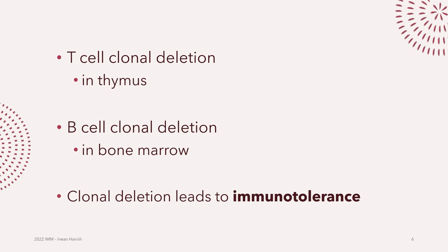This process of clonal deletion is part of the early maturation of lymphocytes in the primary lymphoid organs — the thymus for T cells and bone marrow for B cells. Clonal deletion is extremely vital for immunotolerance, meaning our mature immune cells will tolerate our own antigens and will not attack our own cells. When you hear about autoimmune diseases, it could mean something is wrong with that immunotolerance and clonal deletion.